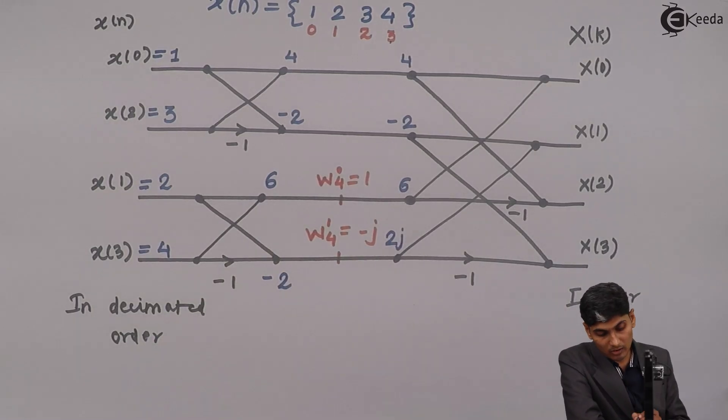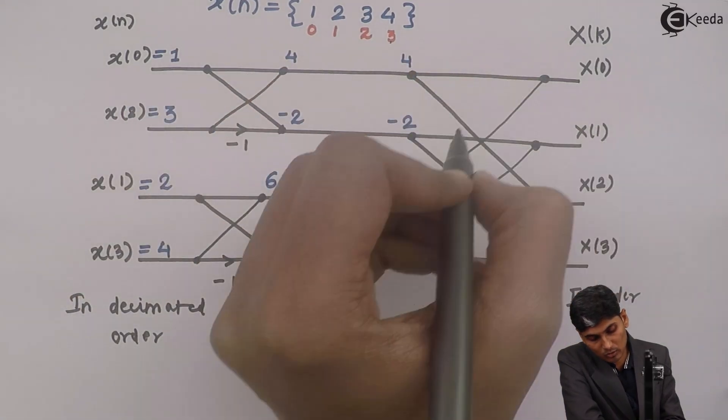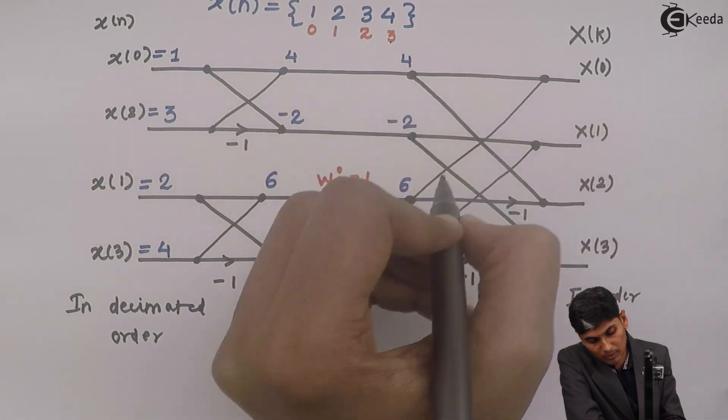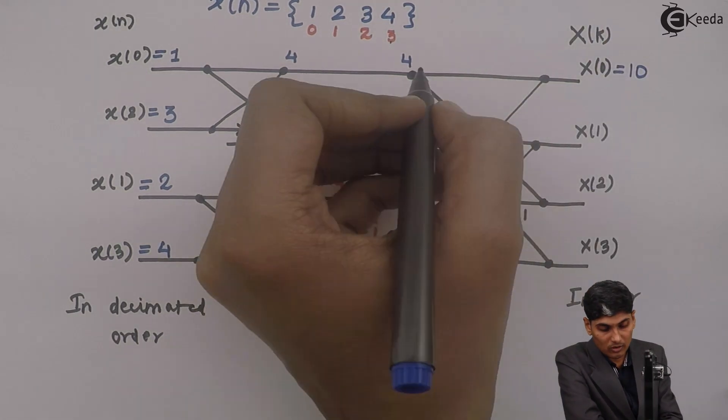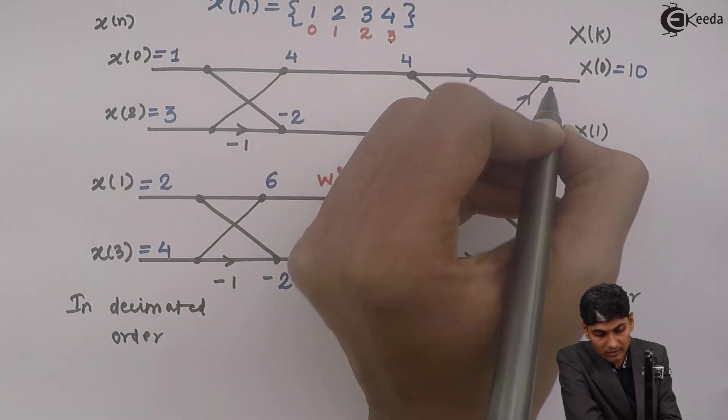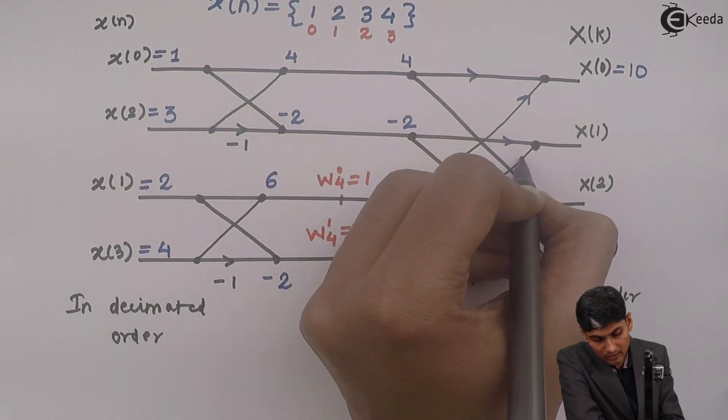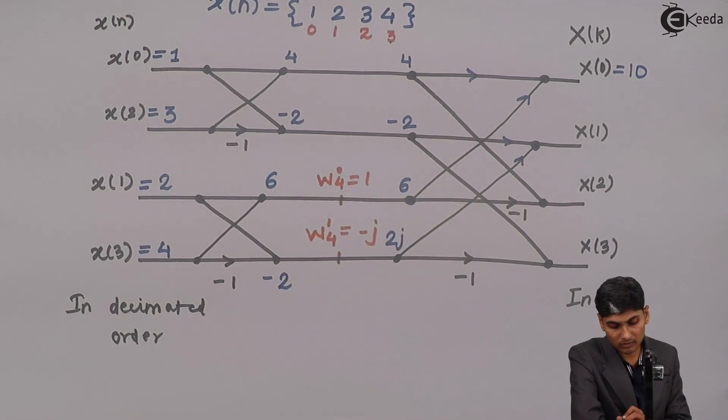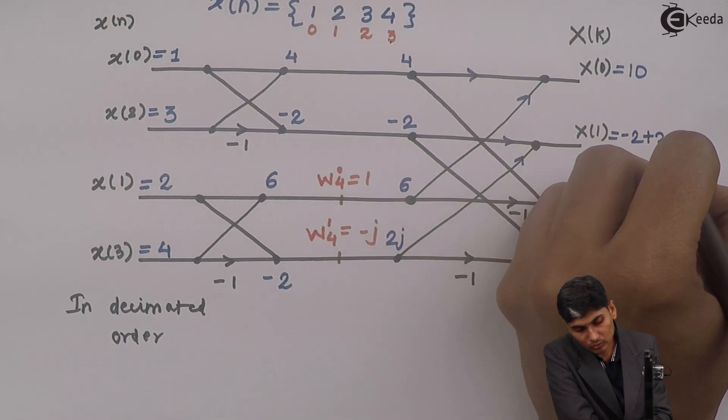Now, again, whenever I go up, I am going to add. So I am going up going from here. 4 plus 6 will give me 10. So I am adding 4 and here is 6. Then I am going to add 2 and then this is minus 2 and this is plus 2j. So the answer is minus 2 plus 2j.